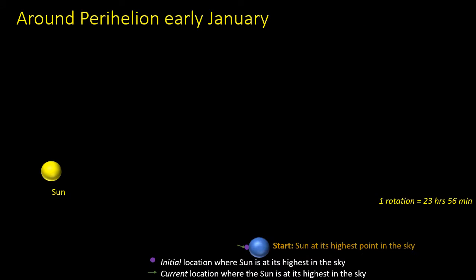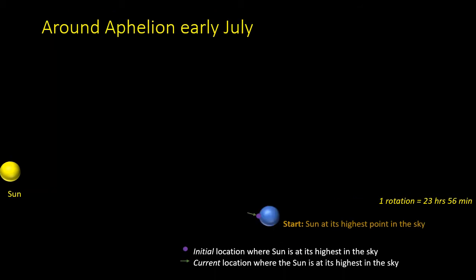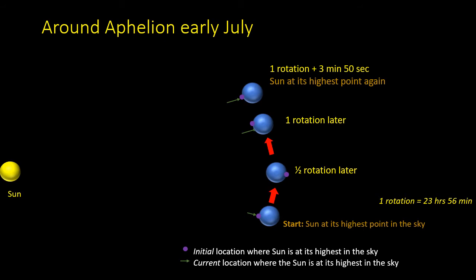In January, when the Earth is moving at its fastest in its orbit, it takes slightly more than one rotation plus 4 minutes for the Sun to be at its highest point in the sky on the following day, so the solar day is slightly longer than 24 hours. In early July, when the Earth is moving at its slowest, it takes slightly less time than one rotation plus 4 minutes, so the solar day is slightly shorter than 24 hours.